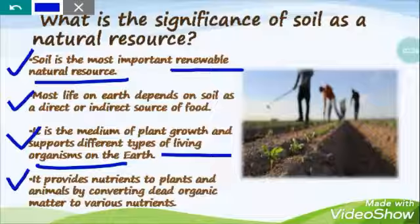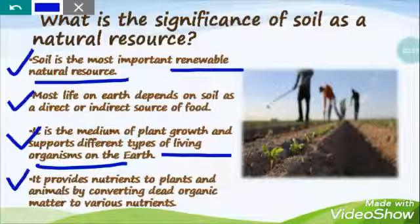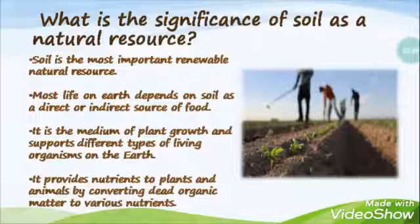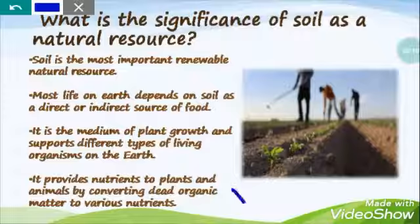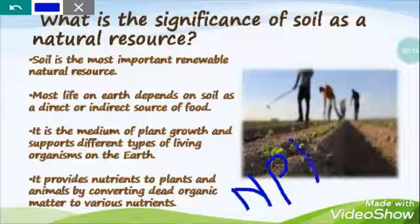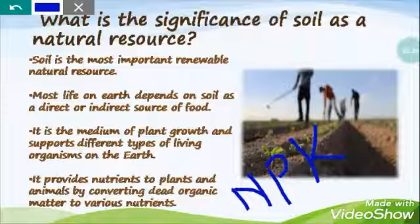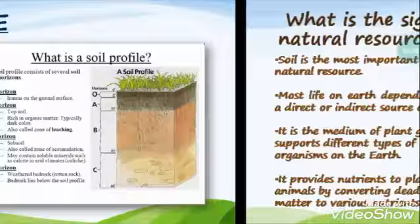Number four, very important: soil provides nutrients to plants and animals. Soil is a mixture of different minerals, rock, air, water, and different nutrients, which is why it can easily provide nutrients to plants and animals by converting dead organic matter into various nutrients. The main nutrients present in soil are nitrogen, phosphorus, and potassium — together we call it NPK. Some other nutrients like magnesium and sulfur are also present in soil, which help the growth of different plants and are essential for animal bodies as well.